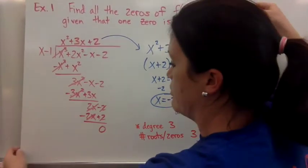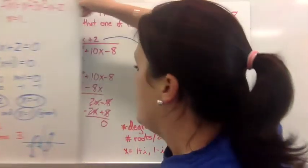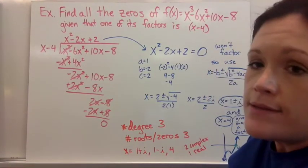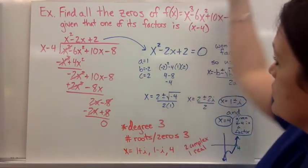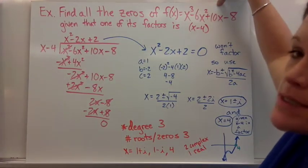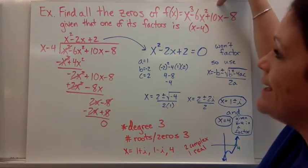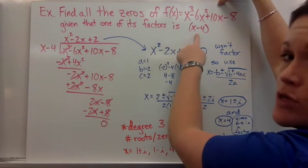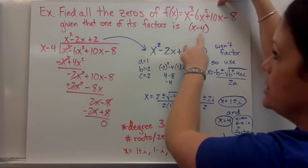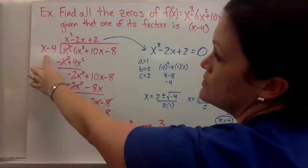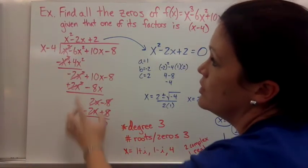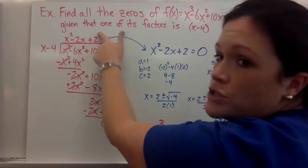Let's look at one more example. For this example it says find all the zeros of this function, x³ - 6x² + 10x - 8, given that one of its factors is x - 4. So they might already give you it as a factor. So we put it over here and use long division. Again, this is to reduce your polynomial to quadratic form, which is your quotient.